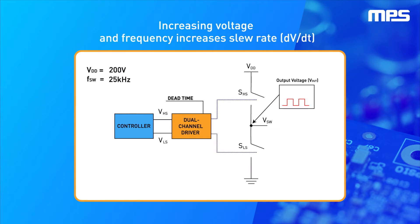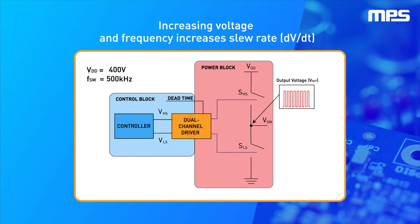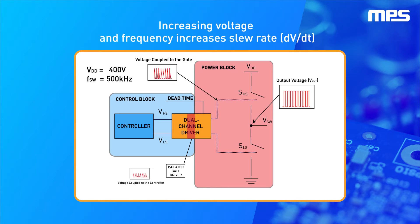Current market and technology trends are pushing towards faster switching and increased bus voltages in power converters. To ensure a converter's safe operation, the power loop must be isolated from the control loop to avoid leakage of high-power signals that could destroy the sensitive control circuitry. However, at high enough frequencies, these signals may not be blocked by traditional isolation methods.